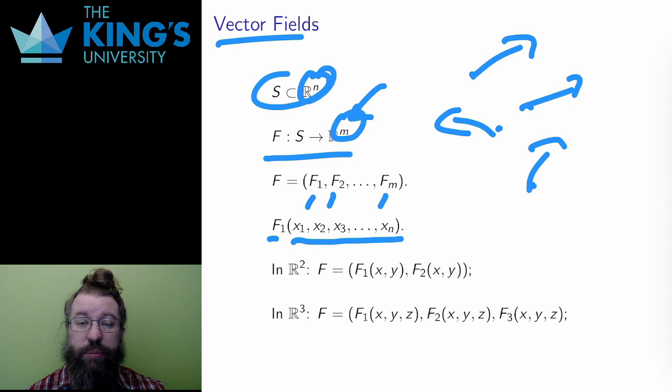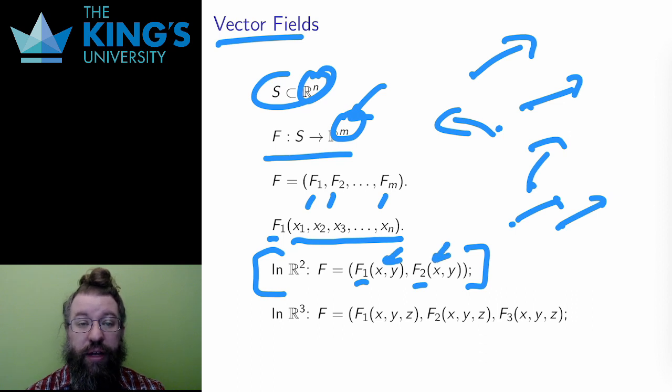To make this slightly more accessible, this is a vector field from R^2 to R^2. It takes every point in R^2 and assigns to it a unique vector, also in R^2. Every point gets an arrow. The components are F1 and F2, which are two scalar fields on R^2. Together, they give the vector output.